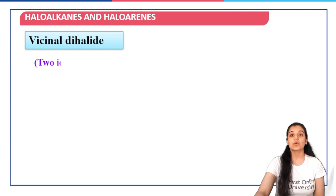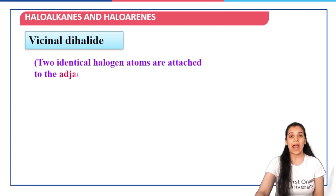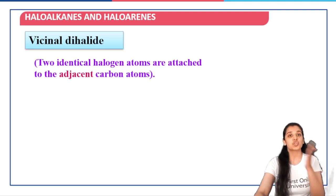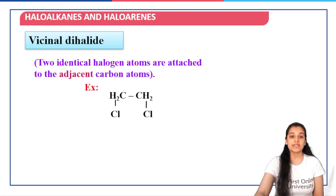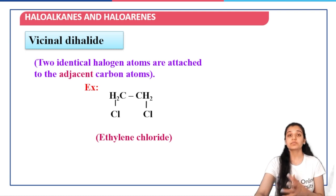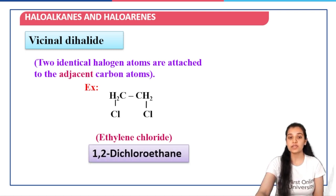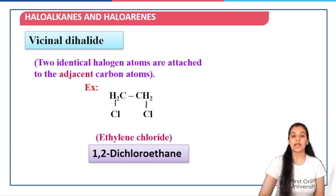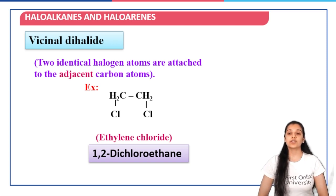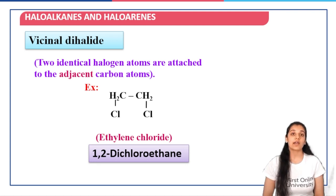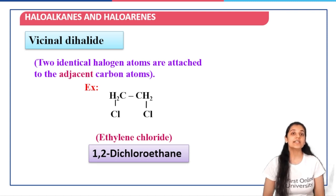The vicinal dihalide is the one where the two identical halogen atoms are attached to two different carbon atoms which are adjacent to each other. For example, 1,2-dichloroethane, also known as ethylene dichloride — here the two chlorine atoms are attached to two different adjacent carbon atoms. Therefore, we call it a vicinal dihalide.